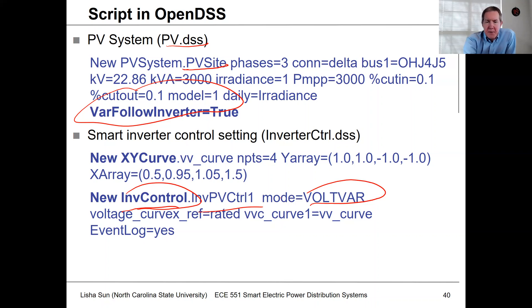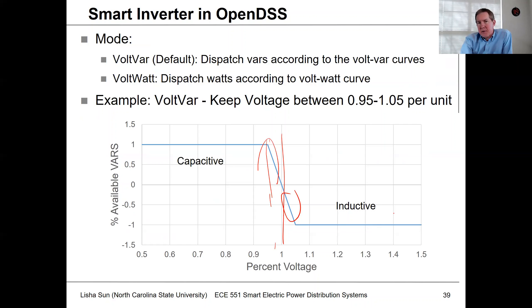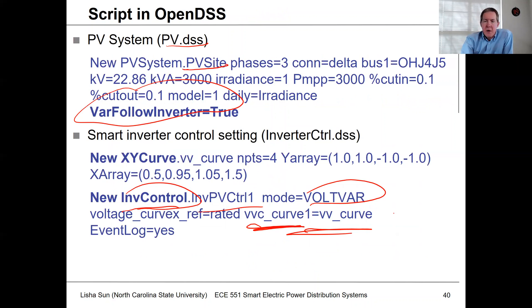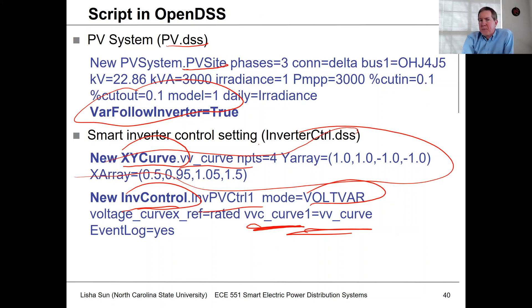There are other modes available. We also define a curve using the new XY curve command. The instance is called 'VD curve', and we define the X and Y points that give this droop curve shape. So you can define a custom droop curve in this case.